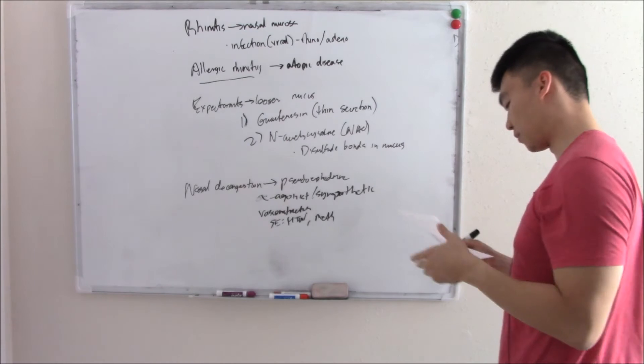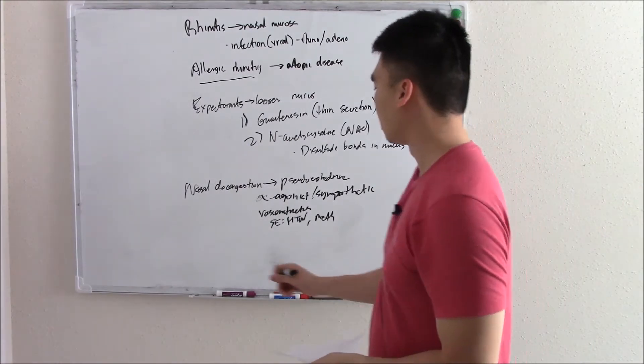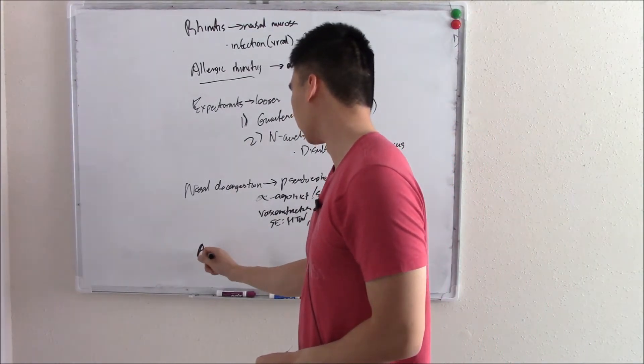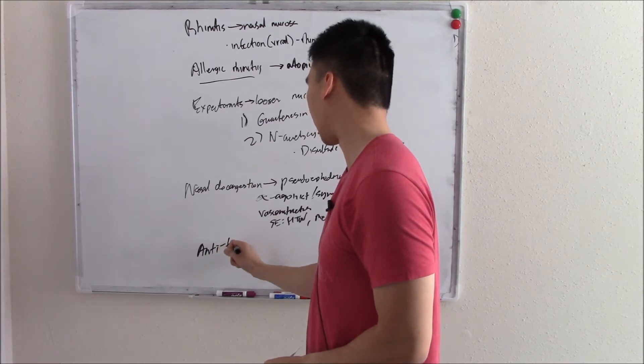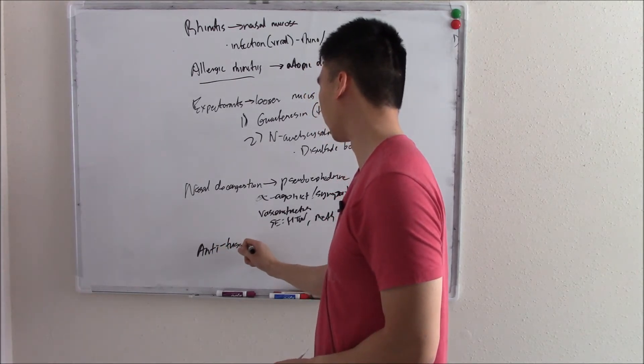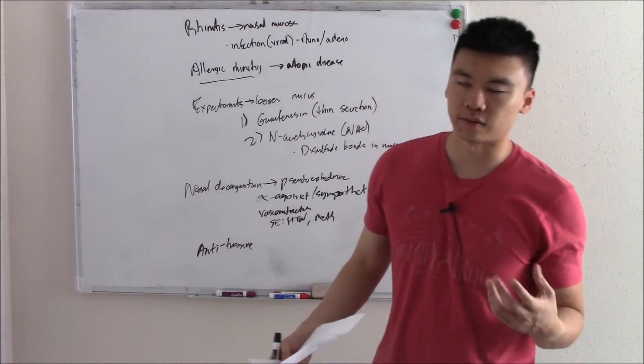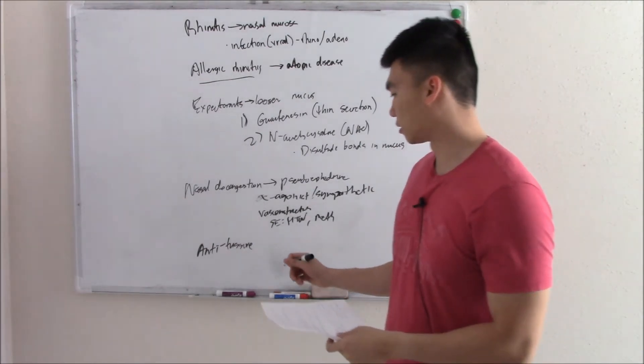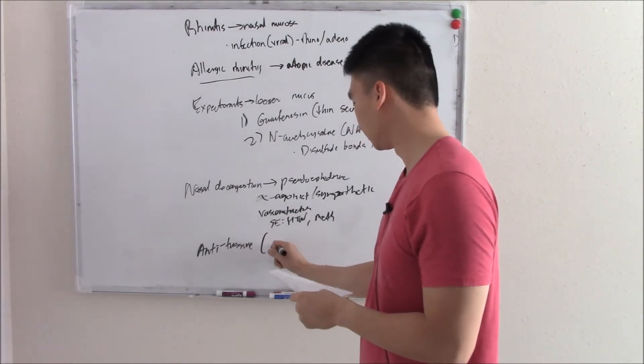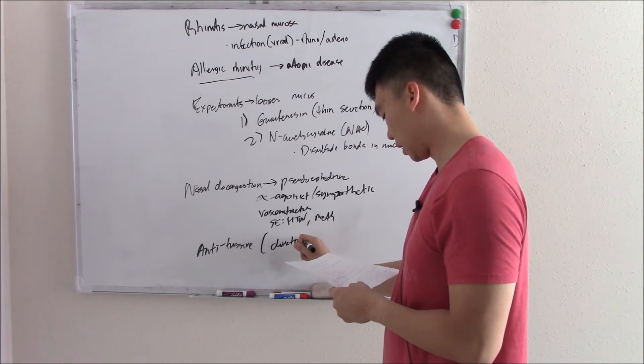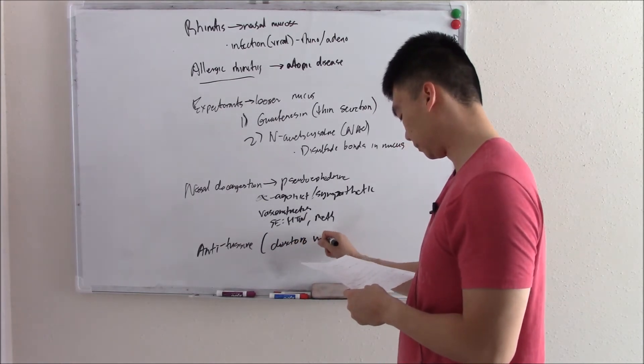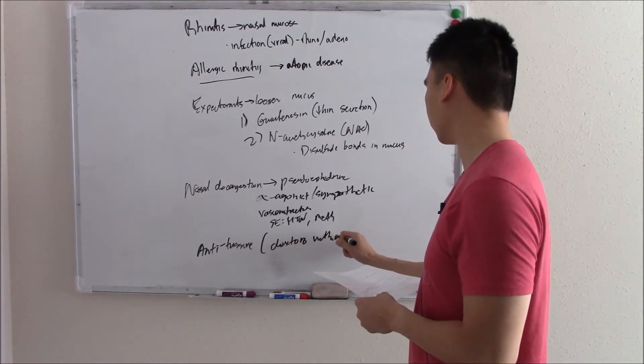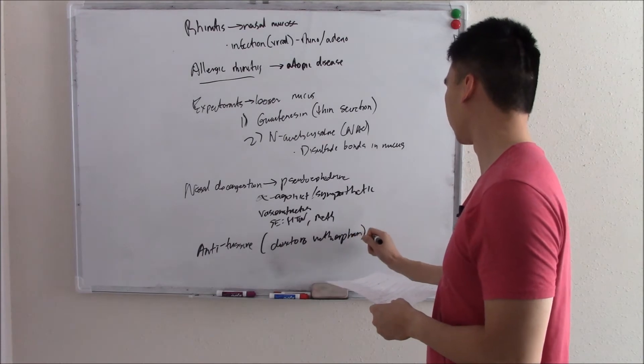Speaking of drugs that can be used illicitly, let's talk about our next group. Antitussives. These are things that stop you from coughing. So if you have a really bad cold and you're coughing all the time, you don't want that. You can get antitussives. A big one is dextromethorphan.